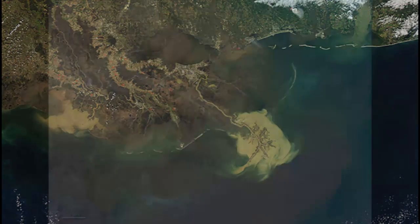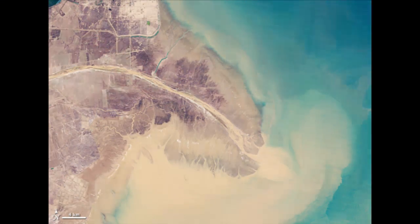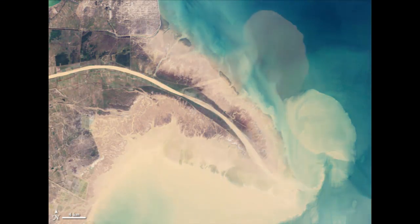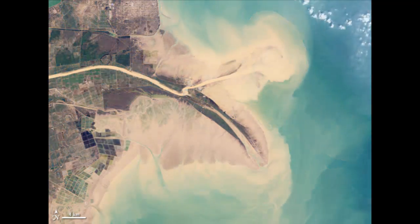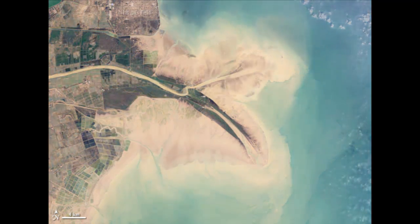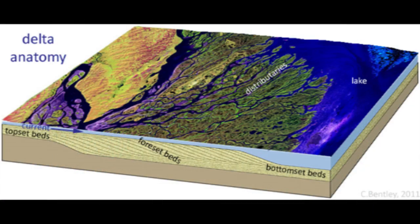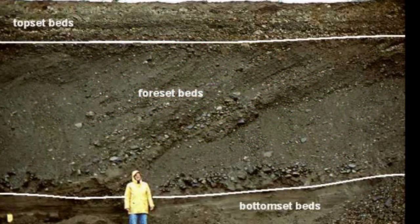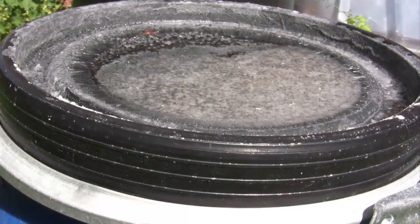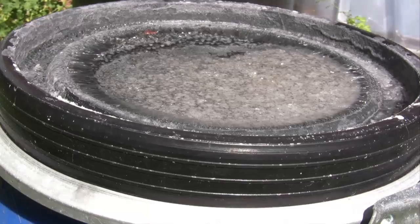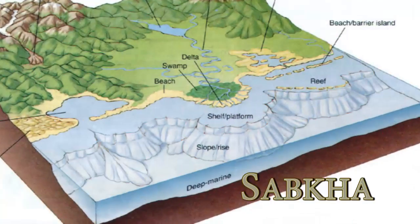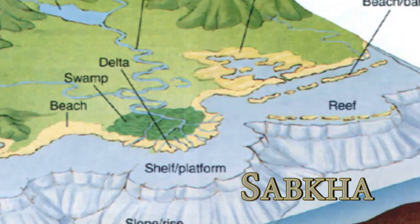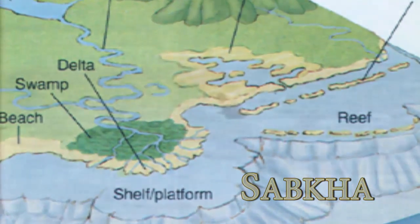Deltaic deposits are usually fine grained, mostly mud, with various bed features such as the bottomset beds, foreset beds depositing off of horizontal, and topset beds on top. Evaporites show up again at beaches, appearing first above the high tide line in sabkhas, which will have carbonates, evaporites, and some silt to fine sand.